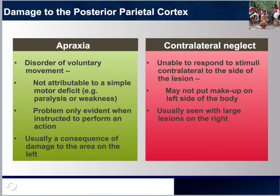Contralateral neglect is the inability to respond to stimuli that is contralateral to the side of the lesion. So if you have a lesion on the left side of your brain, you would not be able to perceive on the right side, and vice versa. This would typically be seen with individuals who suffer large lesions on the right side of the brain. Some individuals with contralateral neglect may neglect part of their body — for example, when applying makeup, they may look very well on one side but the other may look very unkempt. The same applies to wardrobe and eating food.